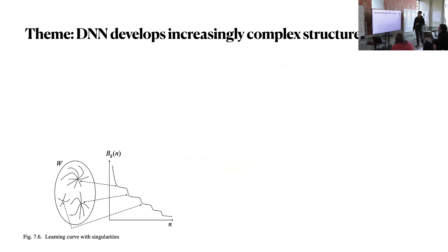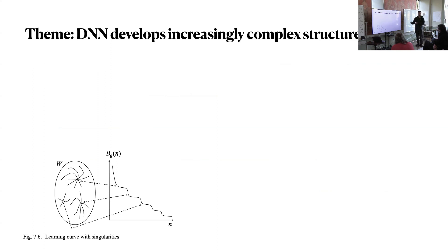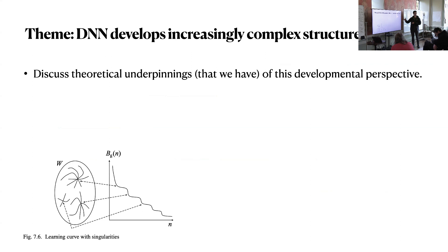On the right we have the animation we have seen — learning via SGD, where there are also very distinct stages. Three stages. The overall theme is that we want to talk about deep neural network learning as if it is developing increasingly complex structures in stages — simple to complex, and in recognizable stages.